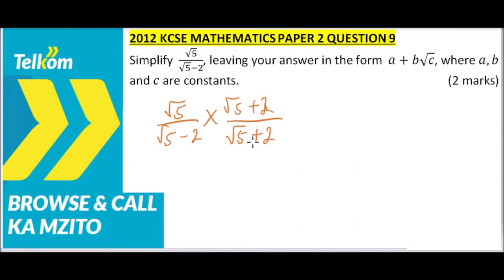When you multiply √5 times √5, you get 5. √5 times 2 gives you plus 2√5. Then you divide by √5 times √5, which equals 5.